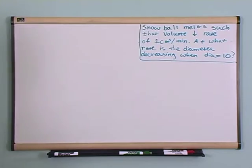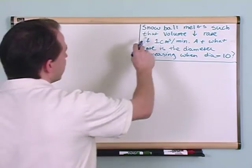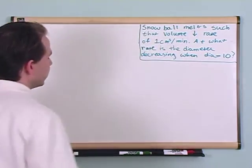Okay, so here's our first problem. We have a snowball and our snowball is melting, and so as it melts it gets smaller and smaller and it tells us that the volume of the snowball goes down, decreases at a rate of one cubic centimeter per minute.